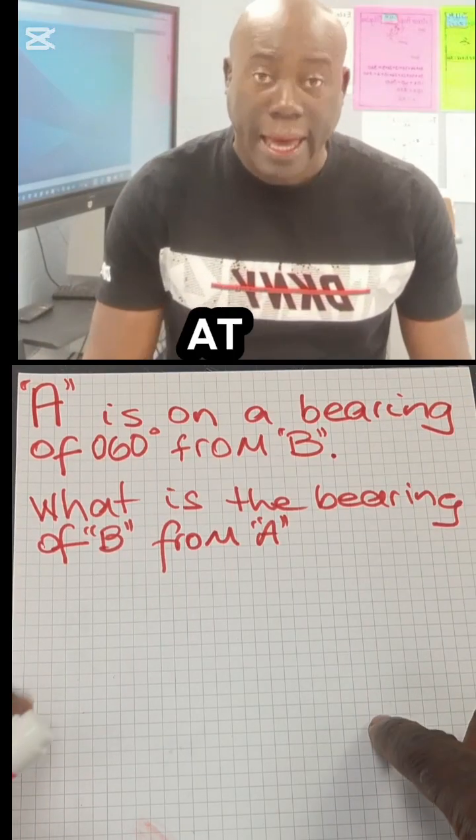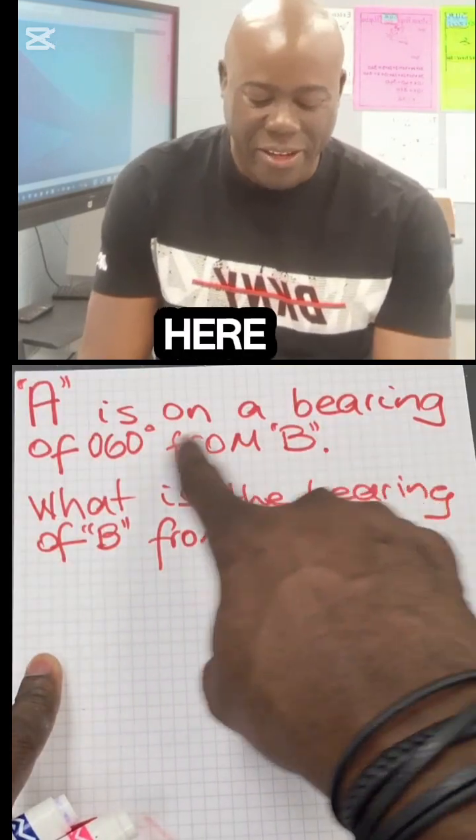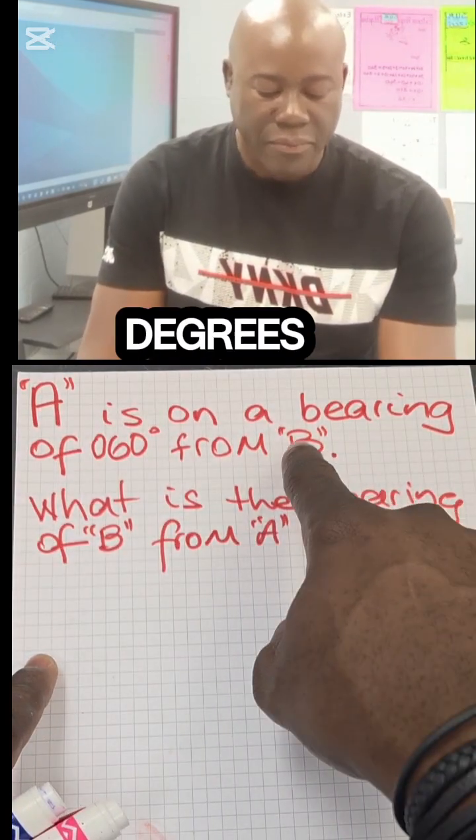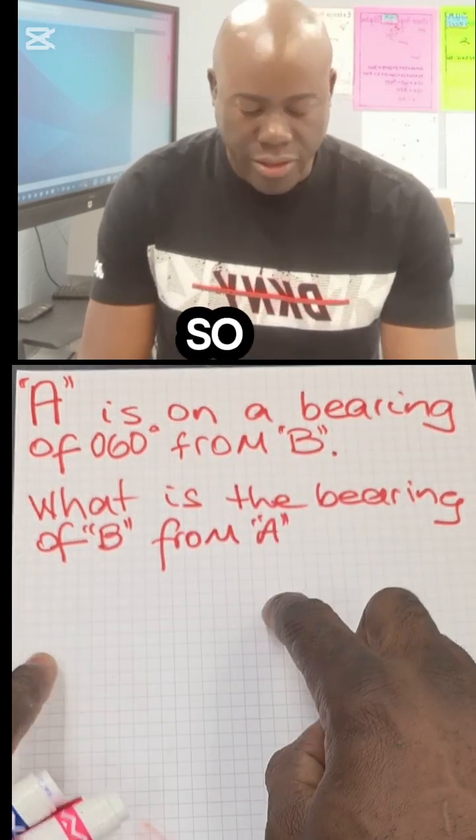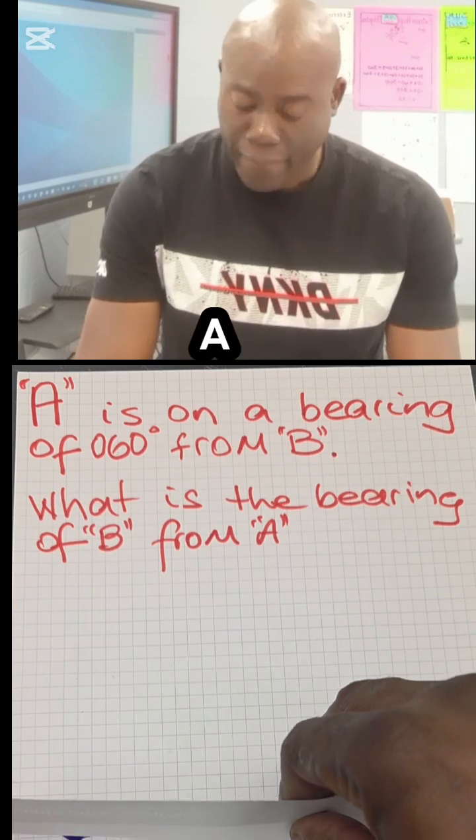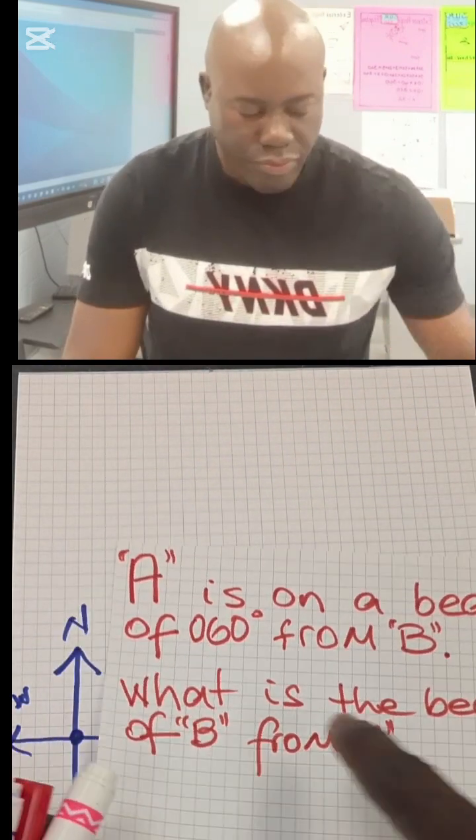Welcome back to my channel. We're looking at bearings right now, so let us read the question quickly. It says A is on a bearing of 60 degrees from B, so this is very important, coming from B. What is the bearing of B from A?